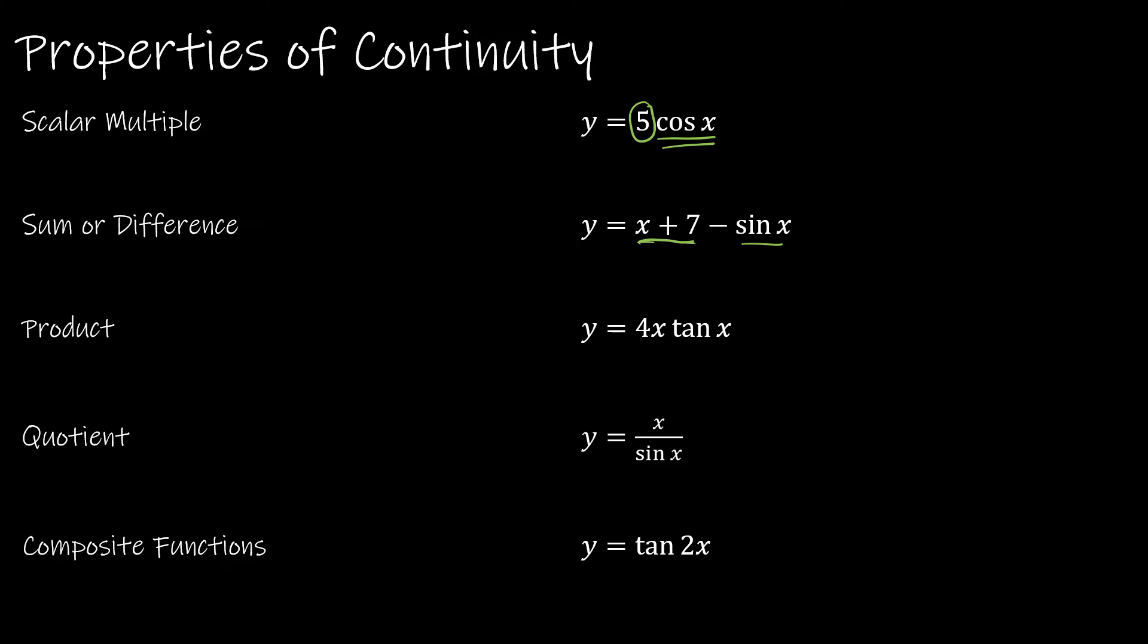Product. Again, if I'm looking at the product of two functions, 4x is continuous everywhere. Tangent of x is discontinuous at x = πn + π/2, where n is some integer. So that whole function is also discontinuous there. We would also take into account if 4x were discontinuous anywhere. But of course, in this case, it is not.